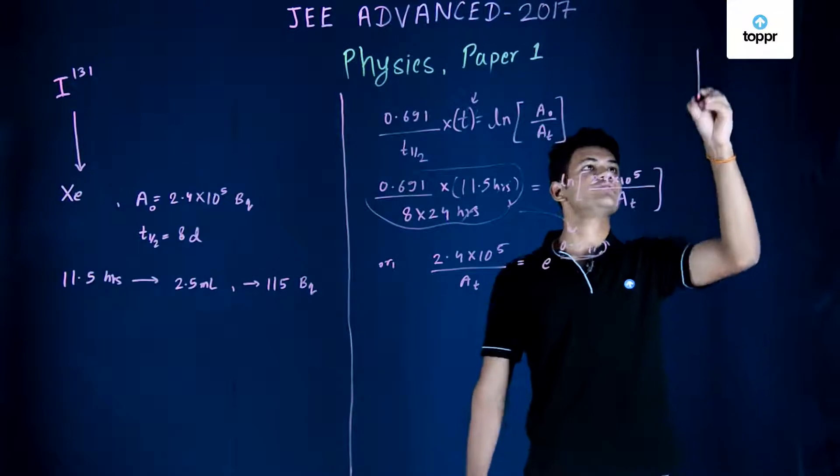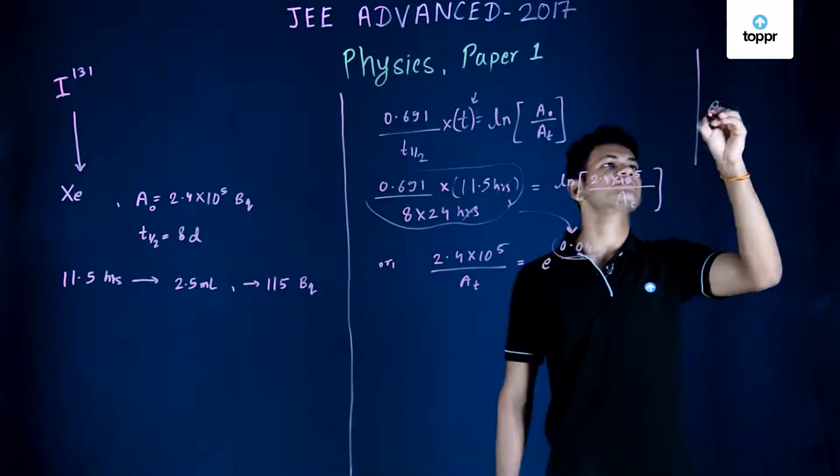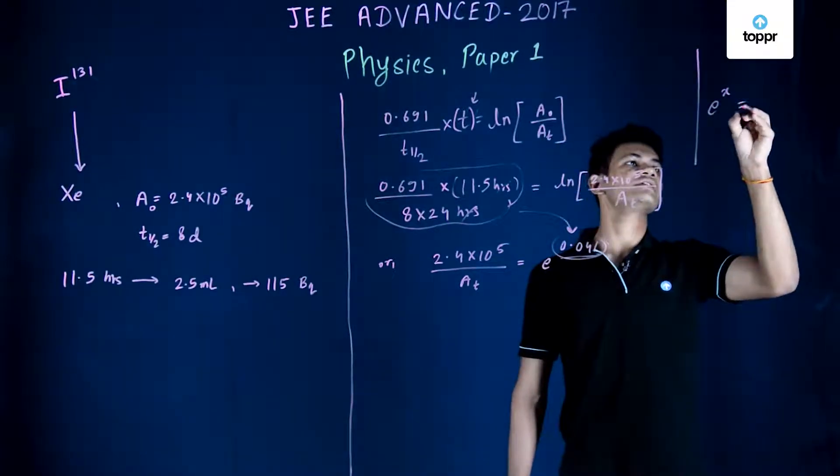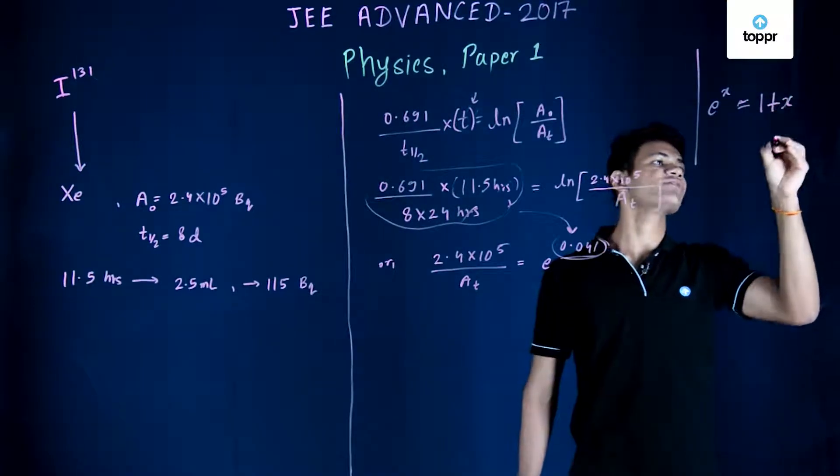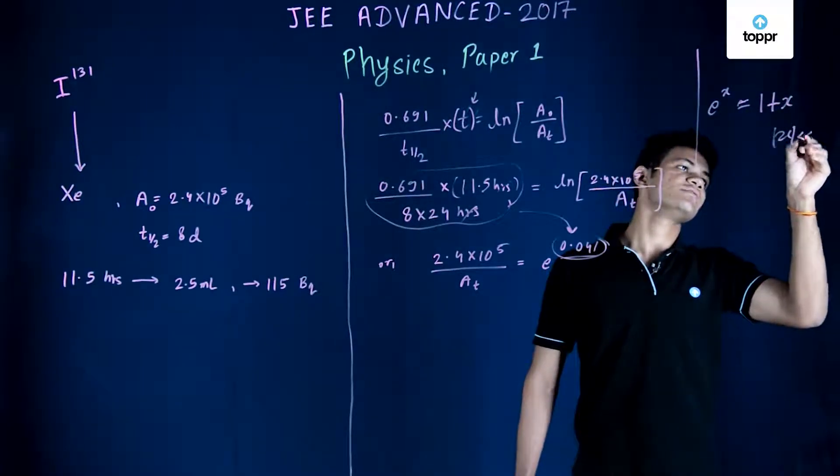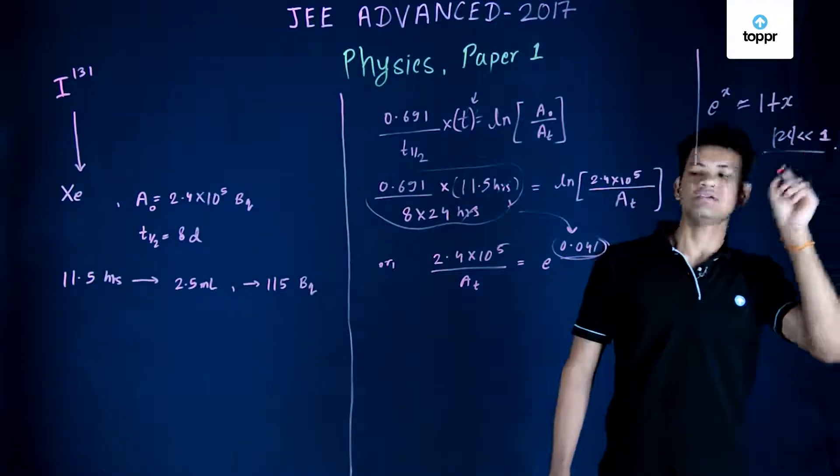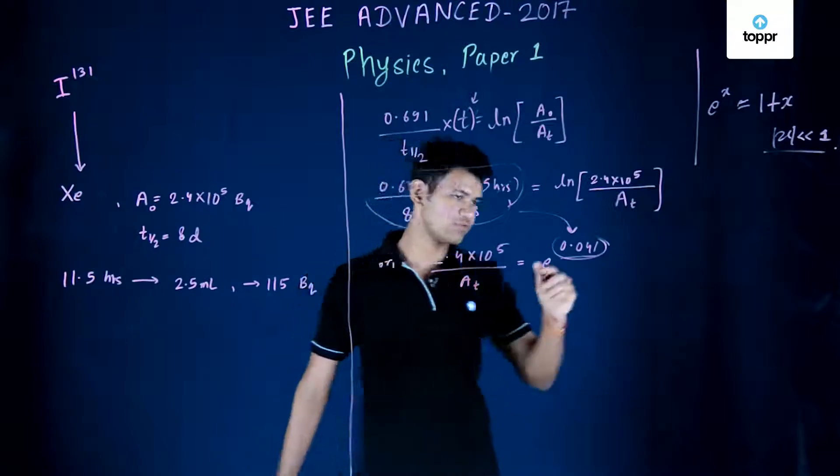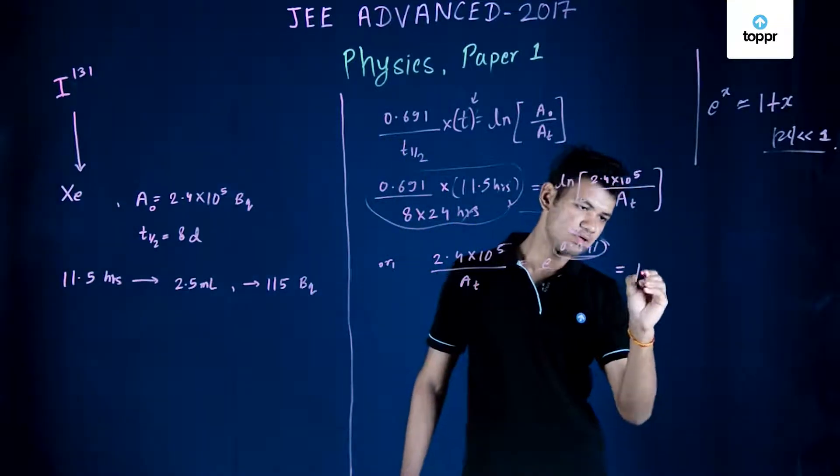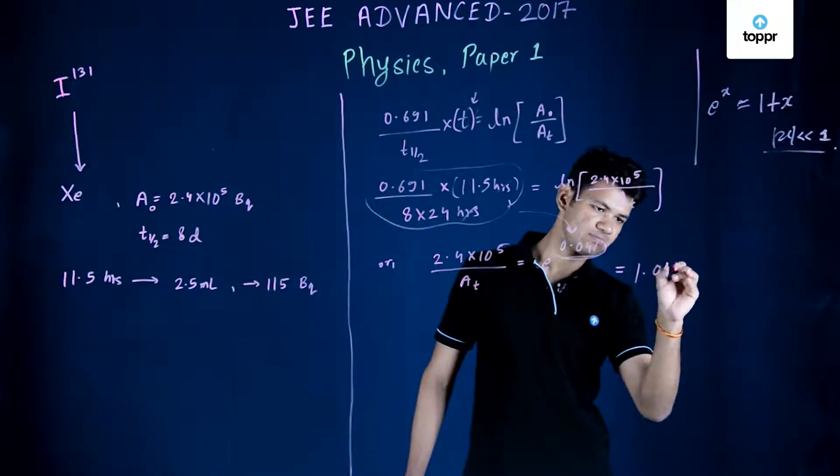Now there is a property of exponential function. For e^x you can approximately write it as 1 + x for x very very less than 1. So here we see that 0.041 is very less than 1, so we can approximate it to 1.041.